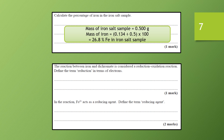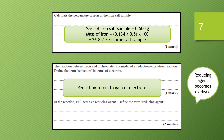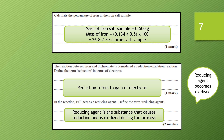We're looking at the reaction between iron and dichromate — it's a redox reaction — and we're asked to define the term reduction in terms of electrons. There are many ways to define oxidation and reduction; in terms of electrons, reduction refers to the gain of electrons. The substance acting as a reducing agent becomes oxidized, so in this reaction Fe²⁺ is acting as the reducing agent — it causes the other substance to be reduced and is itself oxidized during the process.